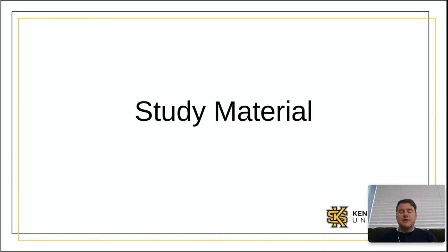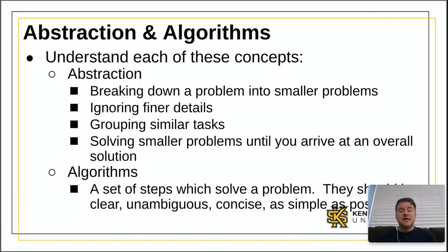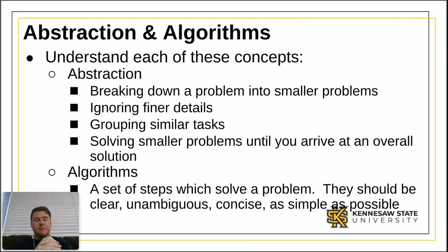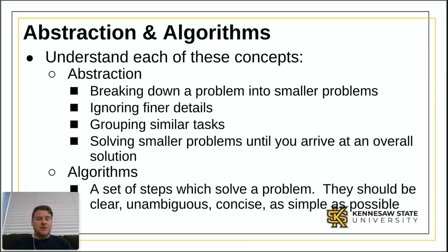You're going to do fine. Don't panic — it works the exact same way as test one did. Now let's talk about the material on the test. The first section is computational thinking. This section had one slide deck called intro to Java and another called computational thinking or thinking like a programmer. The word abstraction means taking a big problem, breaking it down into smaller problems, and not worrying about all the details at once. Group together the things you know how to do, solve them, and put them together until you can solve the bigger problem.